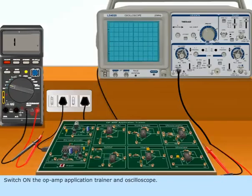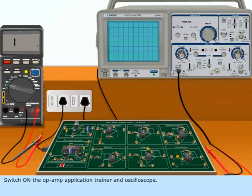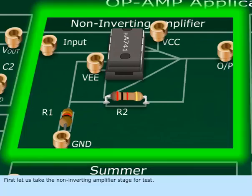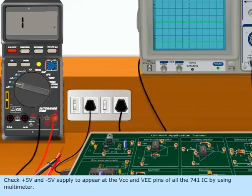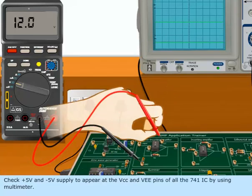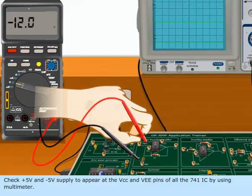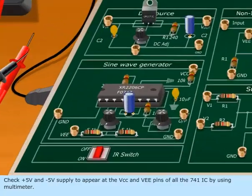Switch on the Op Amp Application Trainer and Oscilloscope. First, let us take the Non-Inverting Amplifier stage for test. Check positive 5 volt and negative 5 volt supply to appear at the VCC and VEE pins of all the 741 IC by using a multimeter.